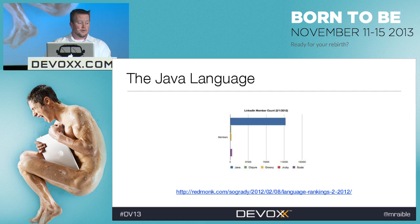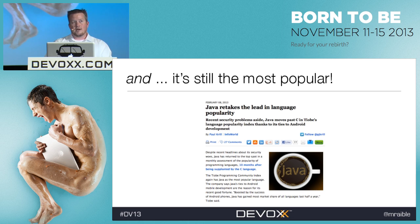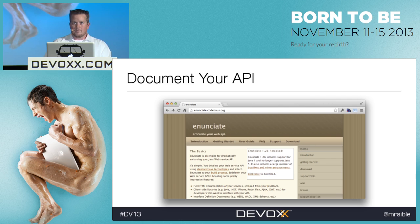Java is still a viable, growing language — it's still the most popular, though C and Java keep jumping back and forth on the TIOBE index. Objective-C is third, C++ is up there, and JavaScript is at number ten. If you want to be a services developer or Android developer, knowing Java is great. If you're going to be a services developer, I'd suggest you learn REST and start using it. You can document your API with Enunciate, which gives clients the ability to download the clients and see all the API methods.